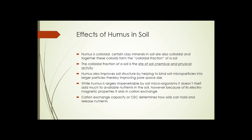Humus has several effects. First, as mentioned, it's colloidal. Certain clay minerals in the soil are also colloidal, and together humus and these clay minerals form what is referred to as the colloidal fraction of a soil, or the colloidal portion of a soil. The colloidal fraction of a soil is the site of soil chemical and physical activity — this is why humus is so important.